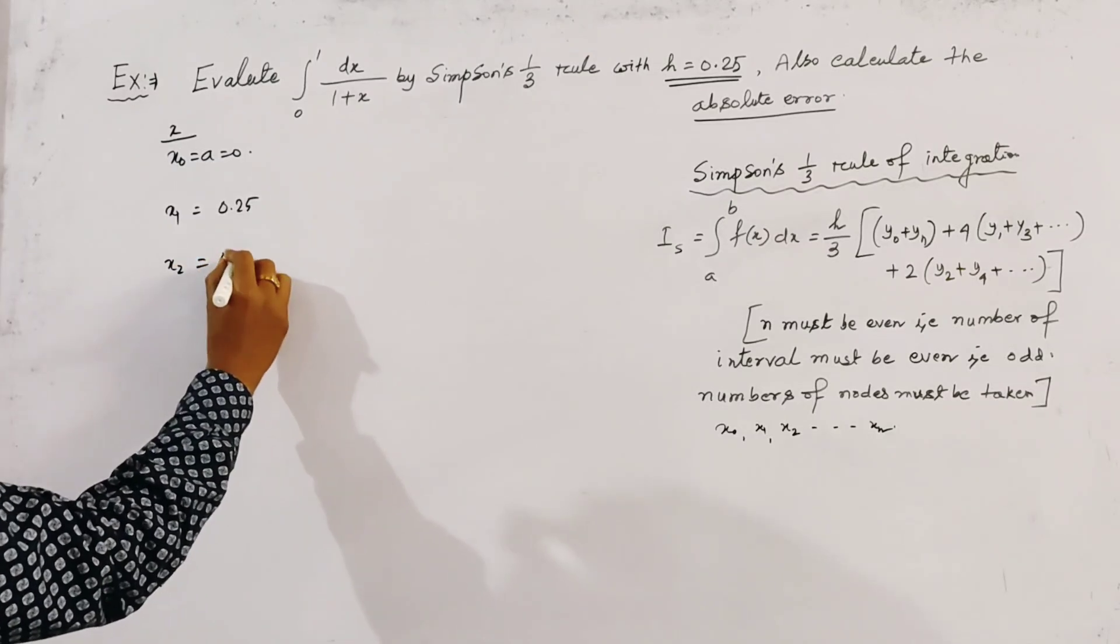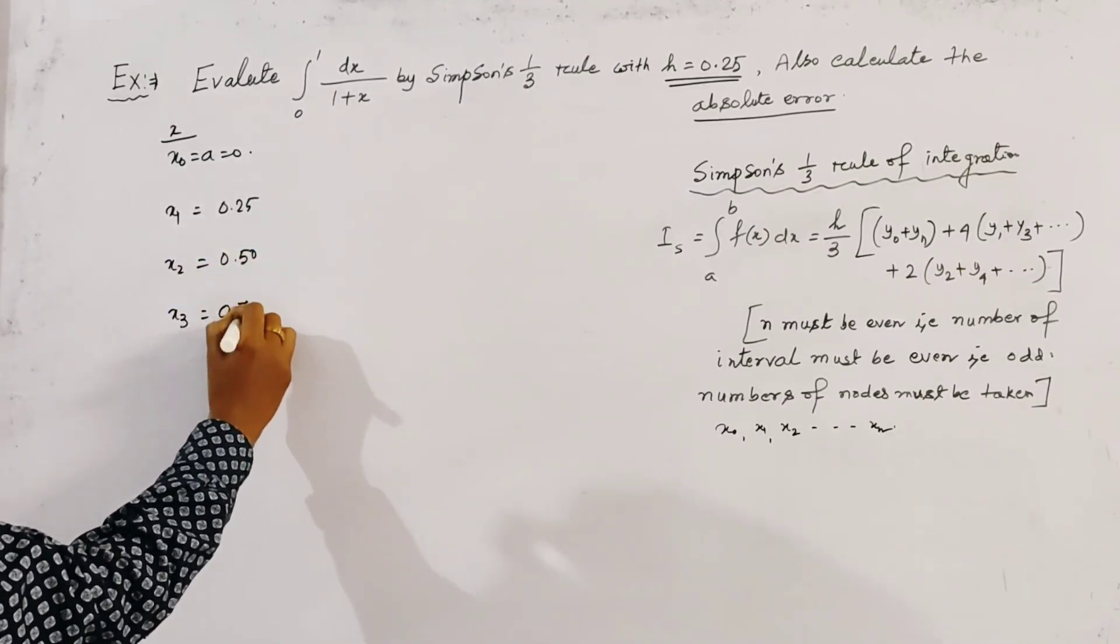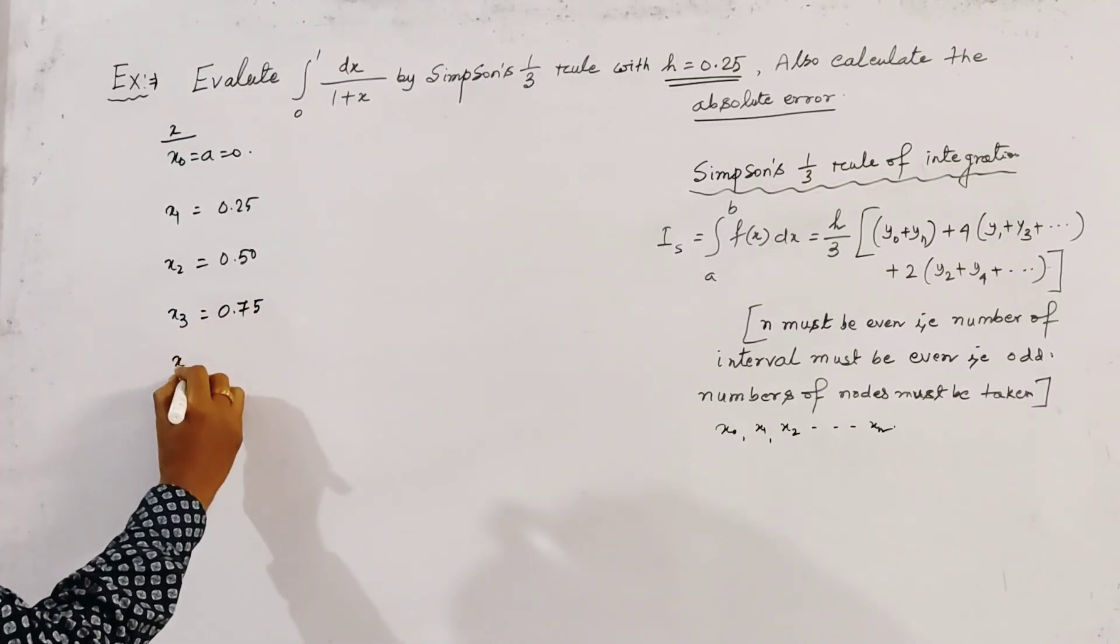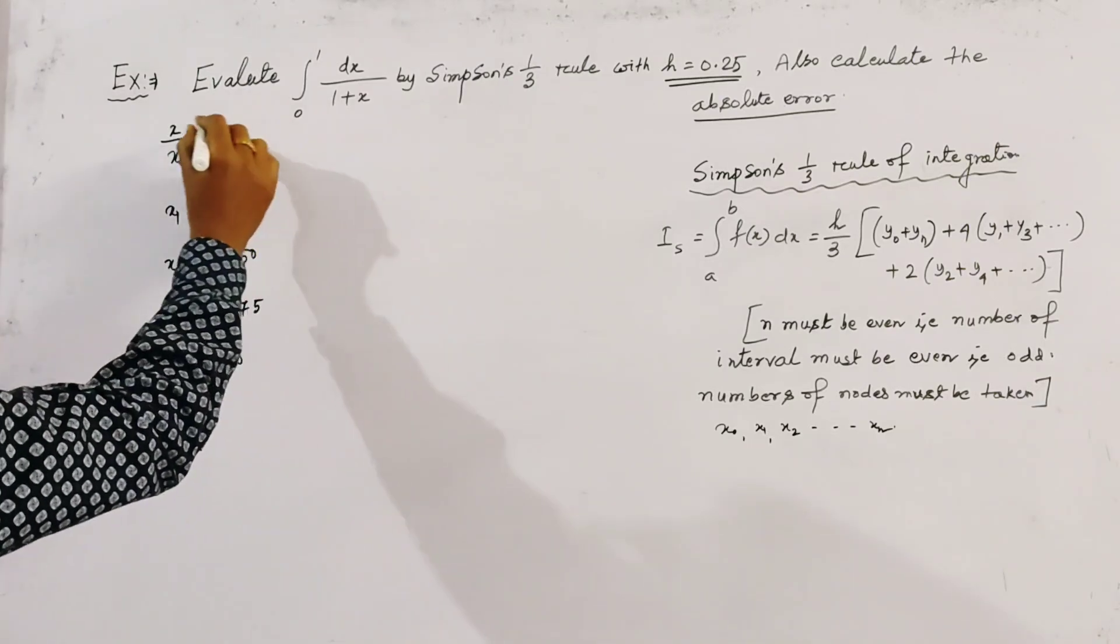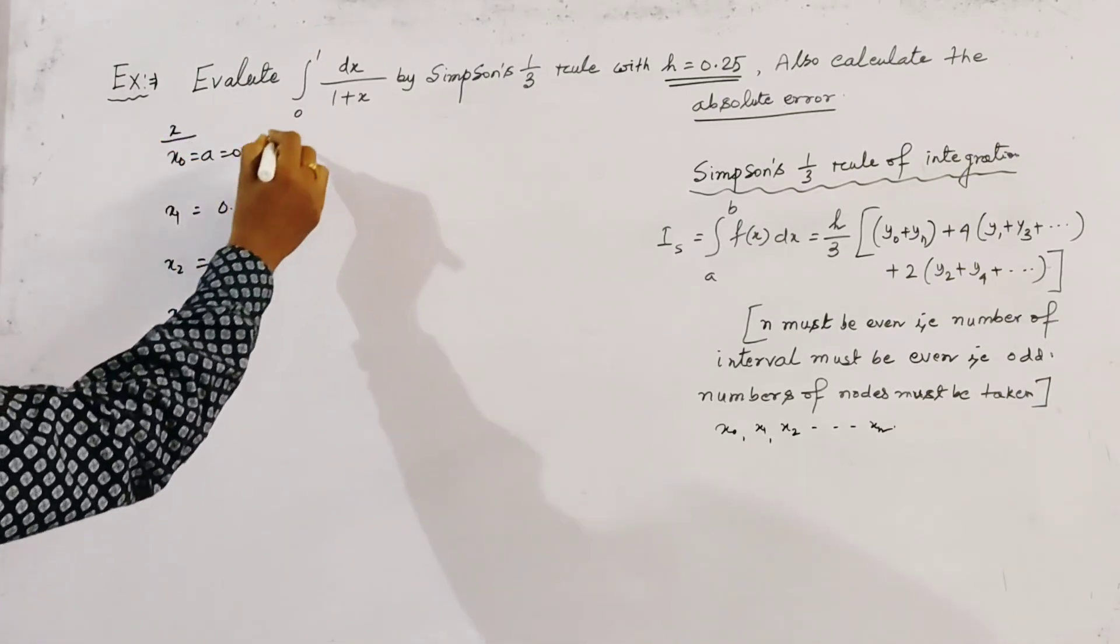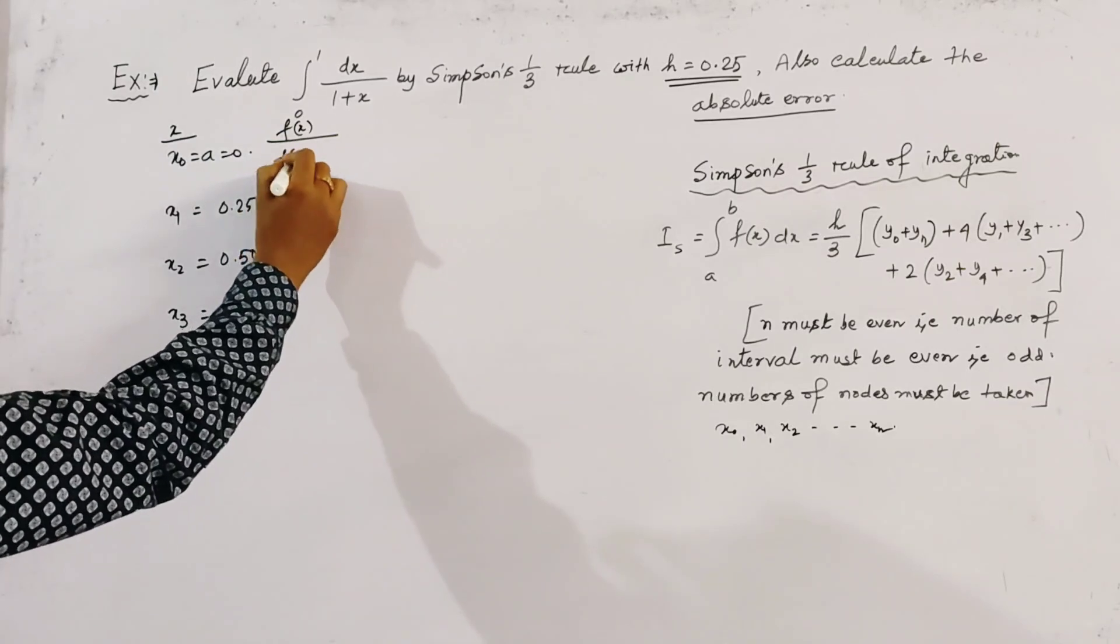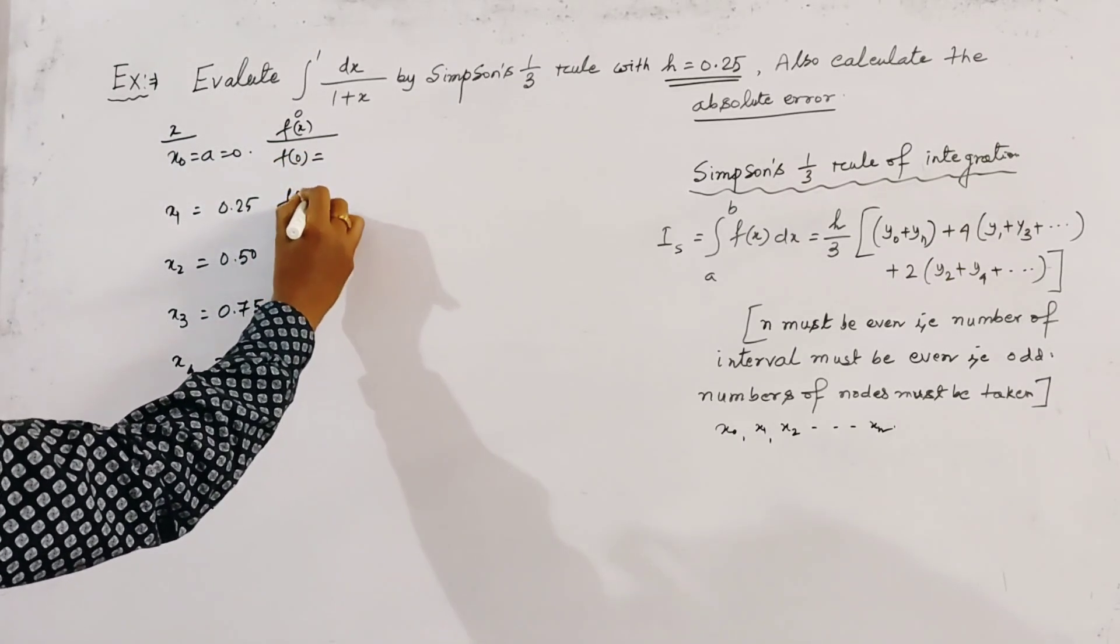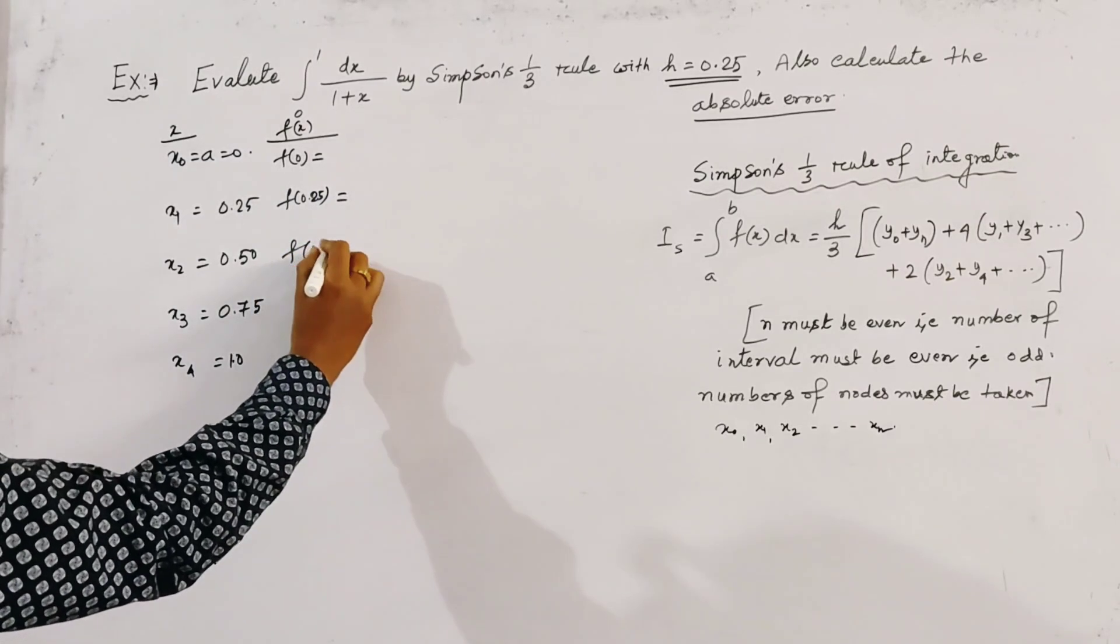x₂ is 0.50, x₃ is 0.75, and x₄ is 1.0. By adding 0.25, we get 1, 2, 3, 4, 5 nodes. Now make a table with x and f(x).